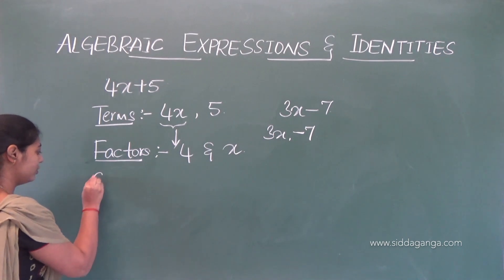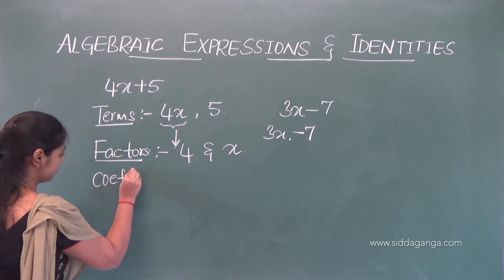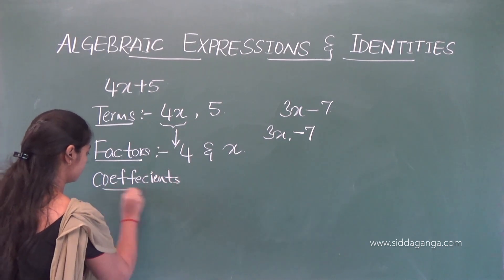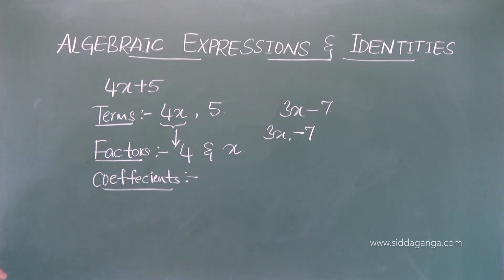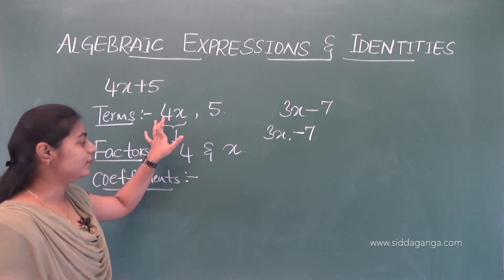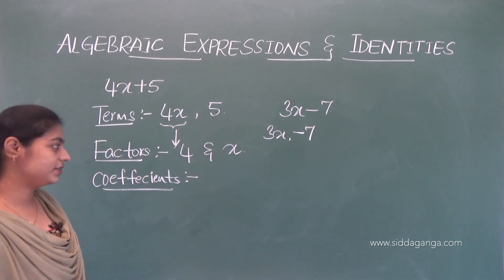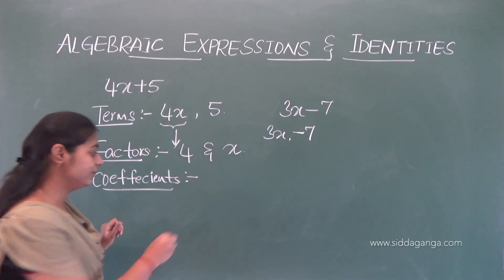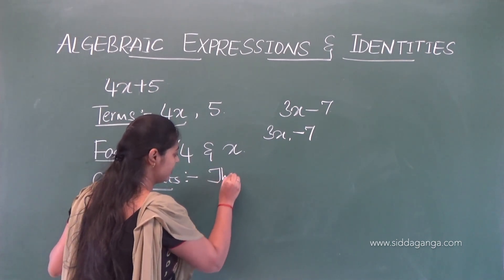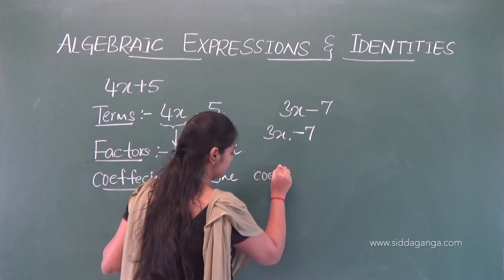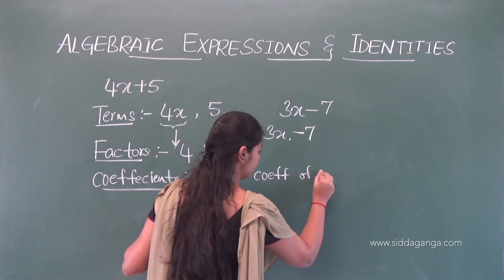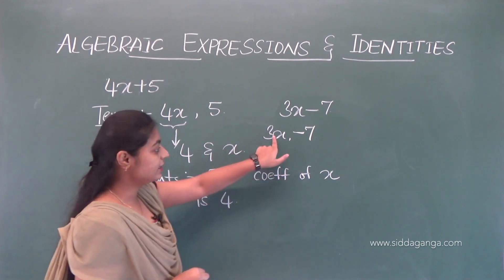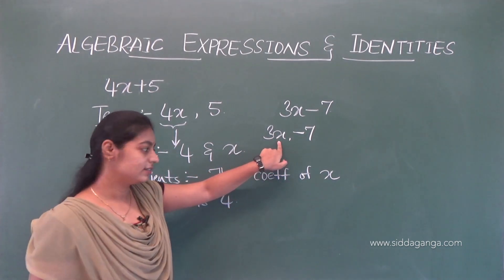Next, what are coefficients? The numerical factor of a term is known as a coefficient. So the numerical factor of this term 4x is 4. Therefore, the coefficient of x is 4. Here in 3x, the coefficient of x is 3.